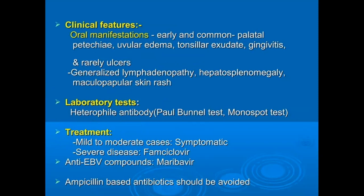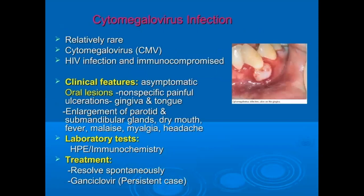In severe cases of infectious mononucleosis, famciclovir is recommended. Ampicillin-based antibiotics should be avoided. HIV infection is a relatively rare oral manifestation. Clinical features include symptomatic oral lesions, non-specific painful ulcerations, gingival and tongue enlargement, enlargement of parotid and submandibular glands, dry mouth, fever, and headache. Laboratory tests should be done and treatment with ganciclovir is recommended for persistent cases.